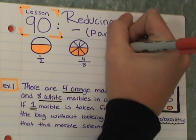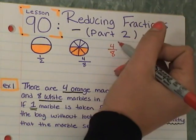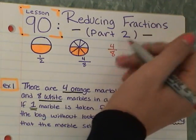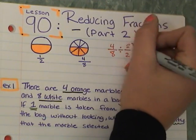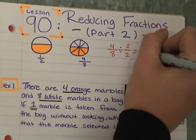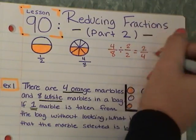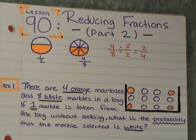We can take 4 eighths and we know 4 and 8, what goes into both of those numbers? 2. So we can reduce by 2, the top by 2 and the bottom by 2. 4 divided by 2 is 2 and 8 divided by 2 is 4. If we reduce 4 eighths by dividing both terms by 2, we find that 4 eighths is equal to 2 fourths. We have our answer right there, great.